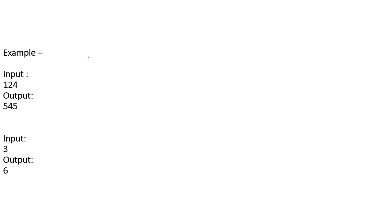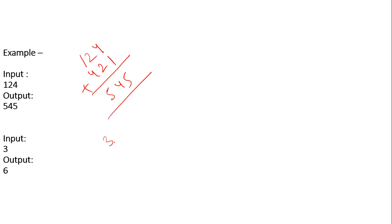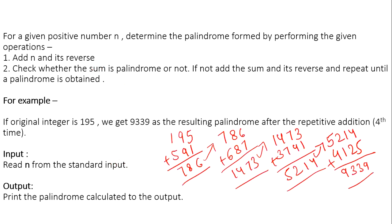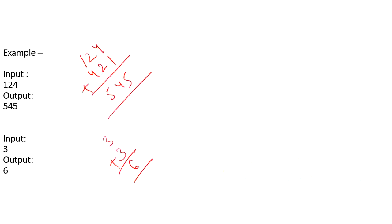For example, if input is 124, then 124 plus 421 gives us 545, which is a palindrome, so just print 545. If input is 3, reverse of 3 is 3 itself, giving us 6, which is a single digit and considered a palindrome. Now let's discuss the approach to solve this using Python — it's going to be a very easy question to solve.